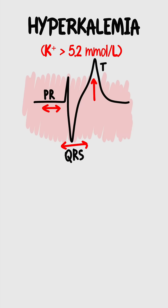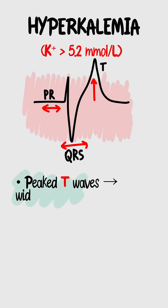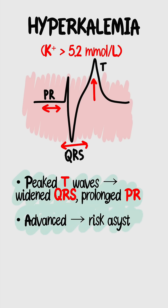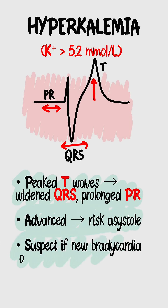High potassium screams with peaked T-waves, then widened QRS and prolonged PR. Advanced cases crash to asystole. Suspect it in a new bradycardia or fresh AV block.